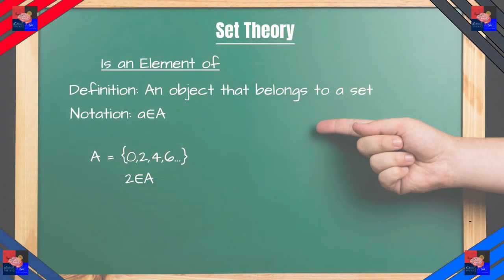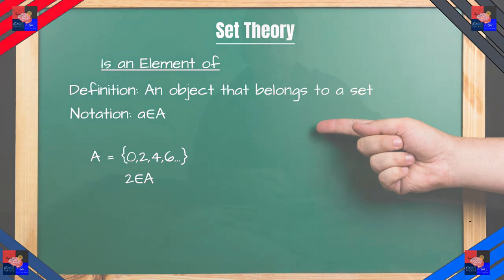Now we have another type of symbol. It is known as 'is an element of' and it is written with this that looks a lot like an E. If A is an element of A, it's an object that belongs to a set. So say two is an element of A.